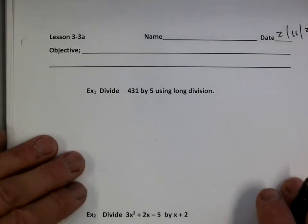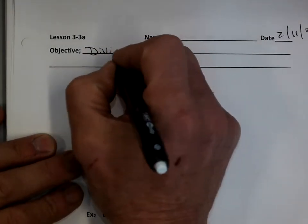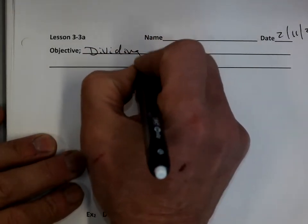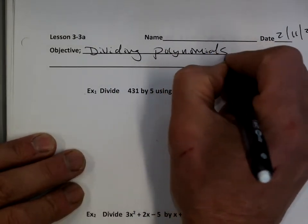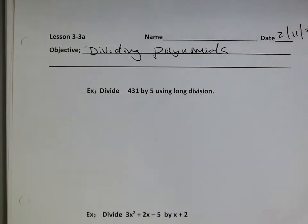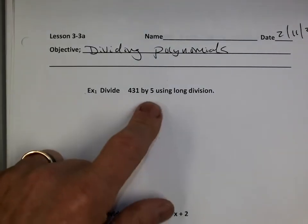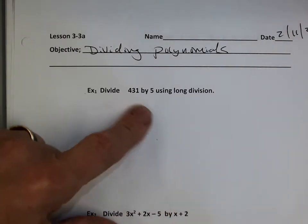Our objective is really going to be dividing polynomials. When we divide polynomials, they're going to follow the exact same rules as long division would be for anything. So what I like to do is start off with a really simple problem, and we're going to take 431 divided by 5.